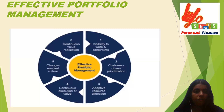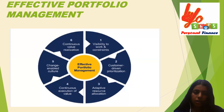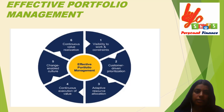There are six steps of effective portfolio management: visibility to work and constraints, customer-driven prioritization, adaptive resource allocation, continuous execution of value, change-enabled culture, and continuous value realization. All six steps are needed to be an effective portfolio manager.